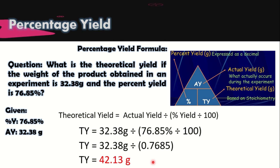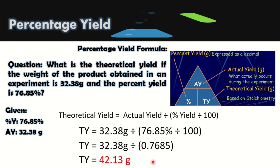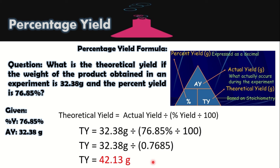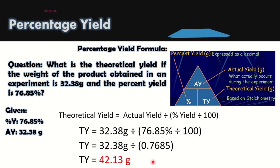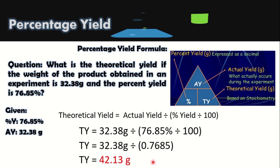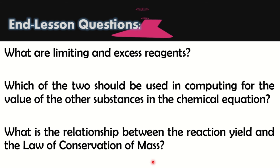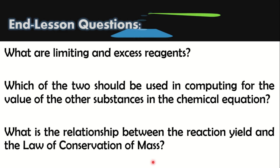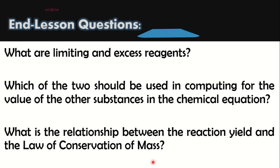One way na kung saan ginagamit natin yung percentage yield sa ating pang-araw-araw na pamumuhay ay para malaman natin kung gaano ka-effective ang isang bagay. There are many steps kung saan pwedeng gawin ang isang bagay — iba-iba yung kanilang efficiency, kung gaano sila kabilis o kadaling gawin. The higher the percentage yield or the higher the efficiency, the better. To end our lesson, you can try summarizing on your own: What are limiting and excess reagents? Which of the two should be used in computing for the value of the other substances? And lastly, what is the relationship between the reaction yield and the law of conservation of mass? Now you can carry on your work by answering module 15.